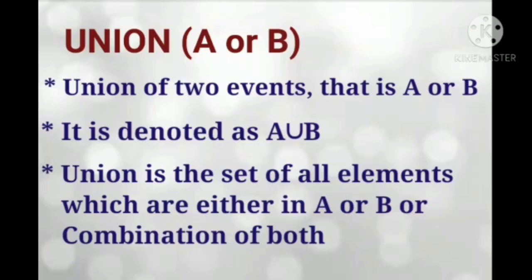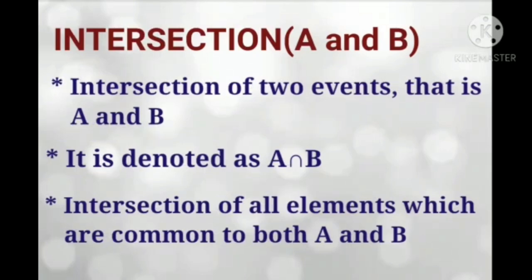That is, if A and B are two events, union is the set of all elements in A and B and their combination. The next one is intersection. Intersection of two events A and B is denoted as A intersection B. Intersection is the set of all elements which are common to both A and B.